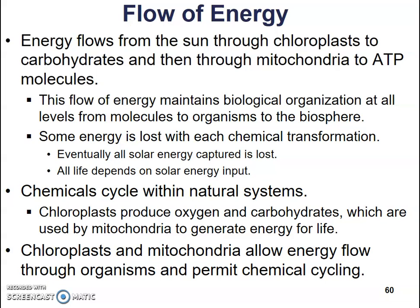Flow of energy: energy flows from the sun through chloroplasts to carbohydrates, then through the mitochondria to form ATP molecules. This flow of energy maintains biological organization at all levels, from molecules to organisms to the biosphere. Some energy is lost with each chemical transformation — every time we transfer energy from one form to another, some is lost as heat. Eventually, all of that captured solar energy is used up and released as heat.